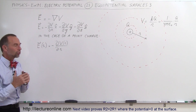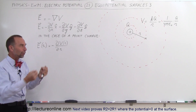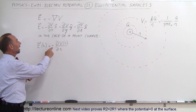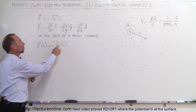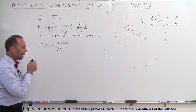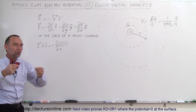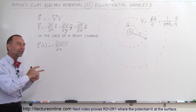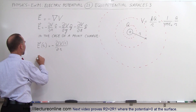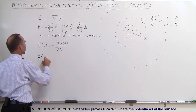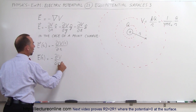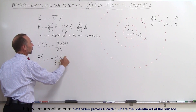In spherical coordinates, if there is no dependency on angle — only on radius — we can write it as: the electric field equals the negative change in the potential with respect to r. So the electric field in the radial direction equals the negative gradient of the potential with respect to r.